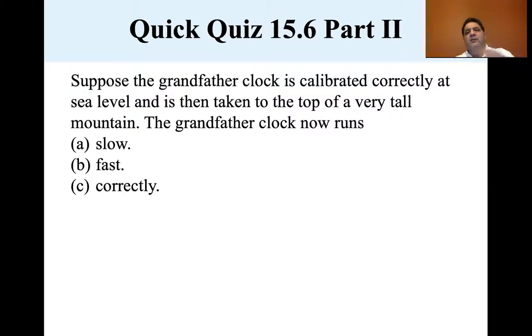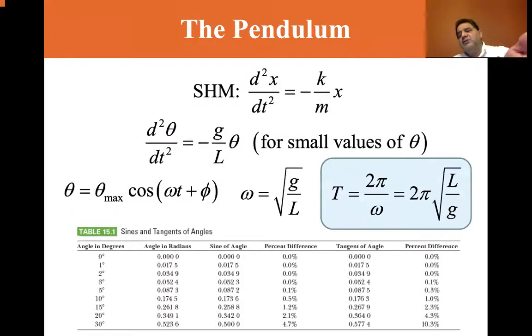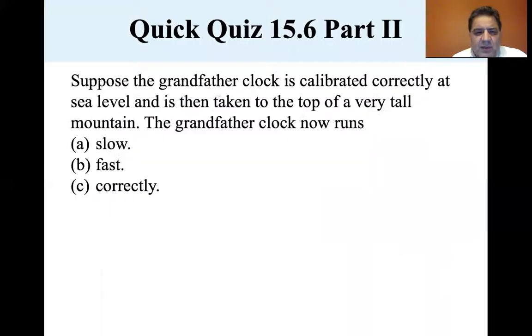All right, let's look. Suppose the grandfather clock is calibrated correctly at sea level, and is then taken to the top of a very tall mountain. Does the grandfather clock now run slow, fast, or correctly? Well, let's look at the equation again. g is in the denominator, so the g at sea level is different than the g at the high mountain. It decreases, so that'll change the period. At the top of the mountain, the value of g is less than at sea level, so the period of the pendulum will increase. If the g decreases, the period increases, just like if L increases, if the length increases, T increases. So it's going to run slow also.